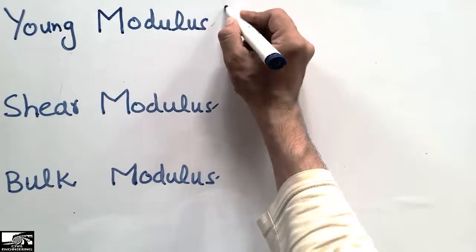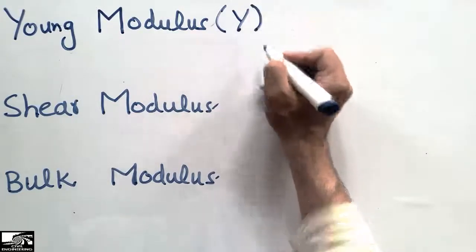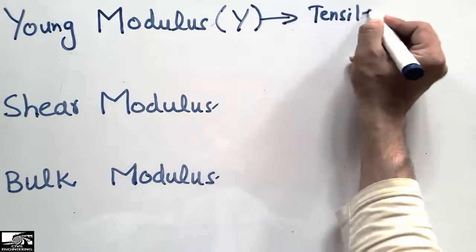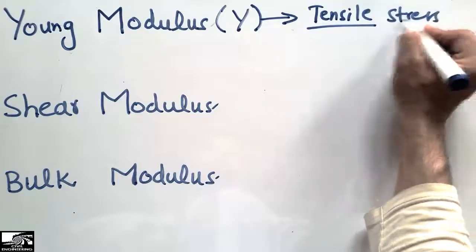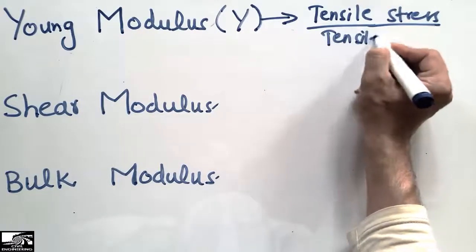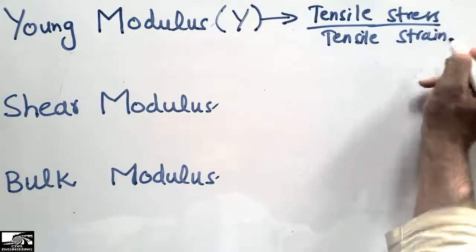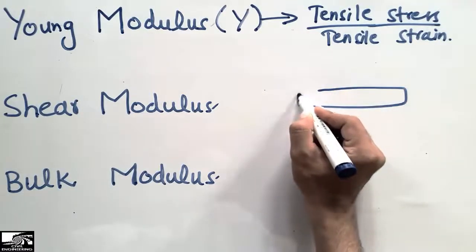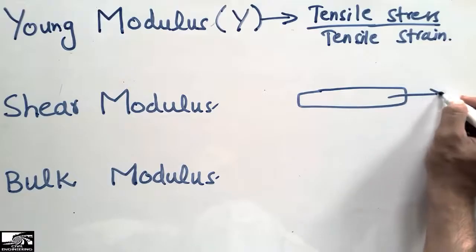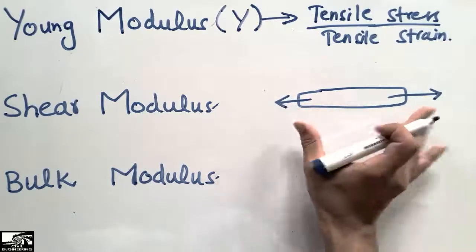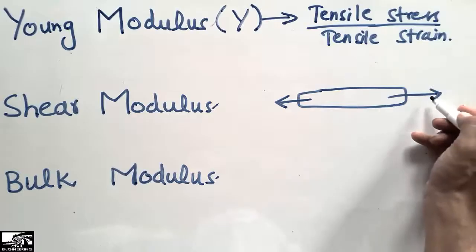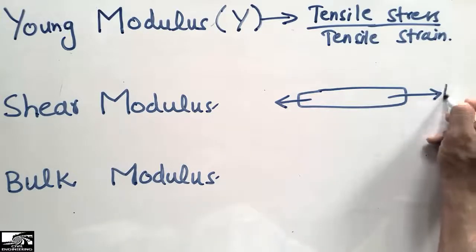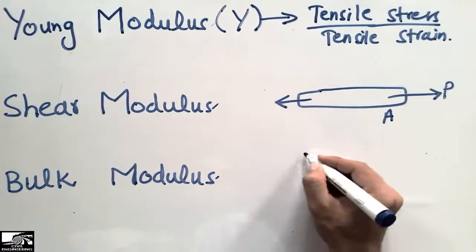The first one is the Young's modulus. The Young's modulus is represented by capital Y and it is defined as the ratio of the tensile stress over the tensile strain. This means that when tensile stresses are acting on an object — consider this is any object with a load applied in the outward tensile direction — the load will stretch the object outward.